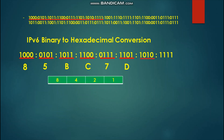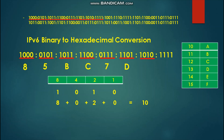Next, we solve for 1-0-1-0 and place it under our table. The values are 8 plus 2, equal to 10. Since 10 is two digits, we use our table to find the equivalent letter, which is the letter A. We place A as our hexadecimal result.